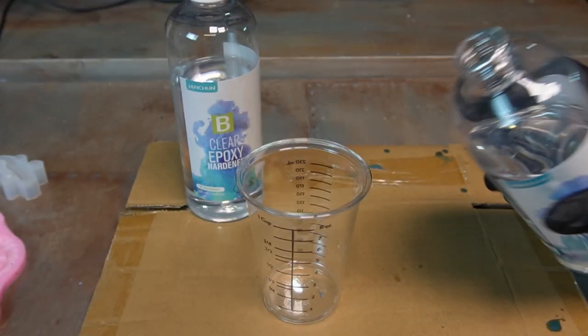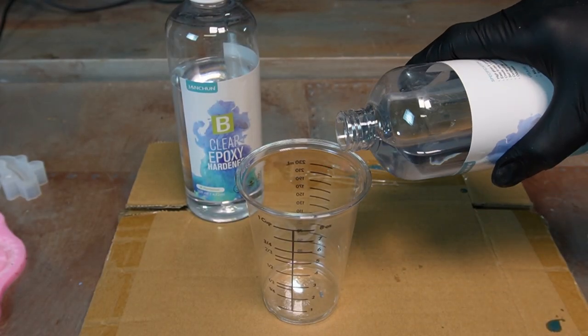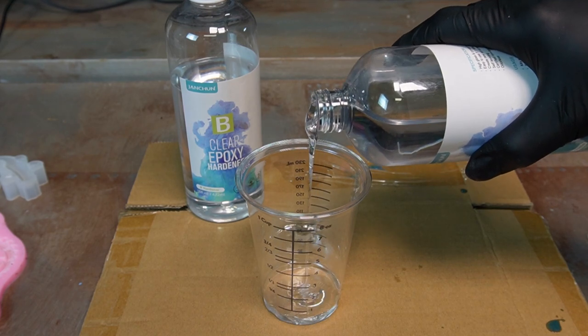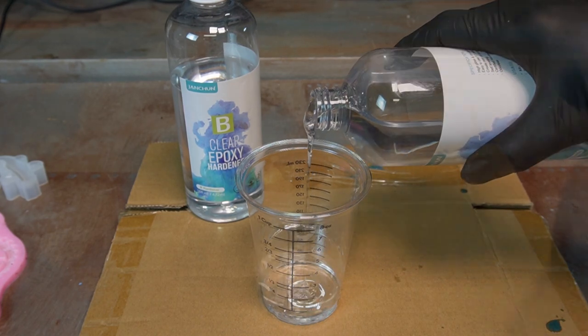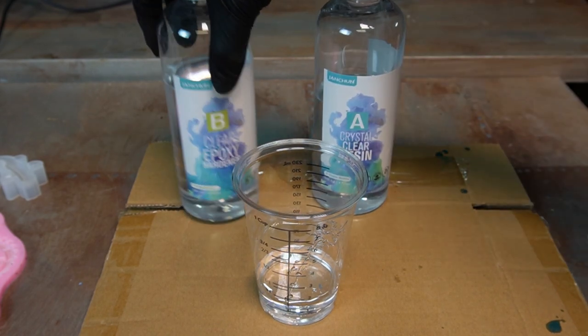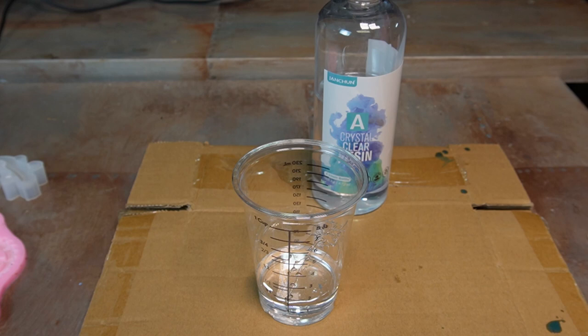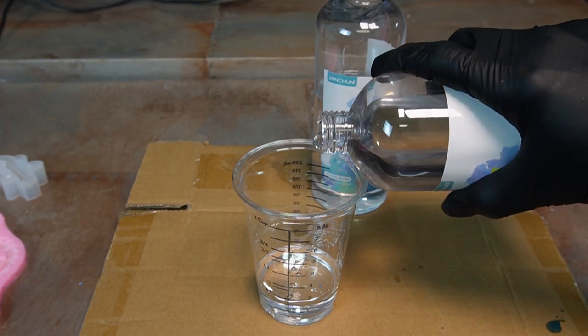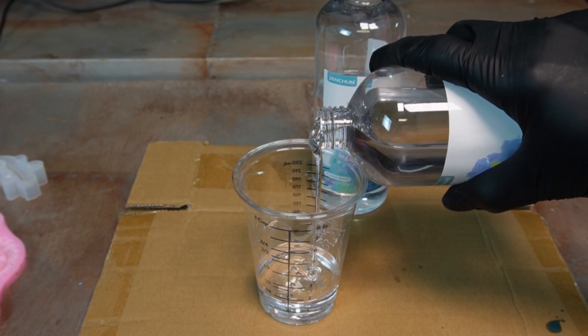Alright, so I'll put one and a half ounces of each. That's the resin, this is the hardener.